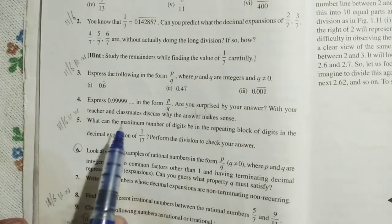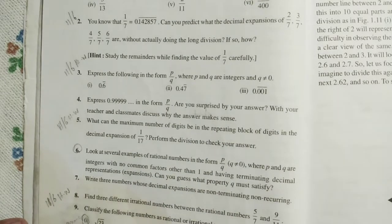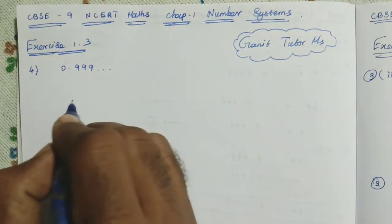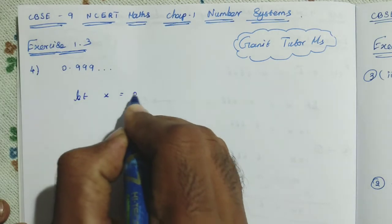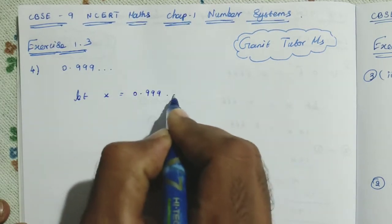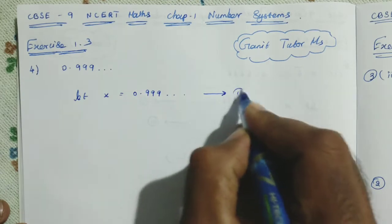Okay. Let me convert the decimal expansion into P by Q form. So, it is very easy. As usual, let the given decimal expansion be X. So, X equals 0.999 dot dot. You just mark this as equation number 1.